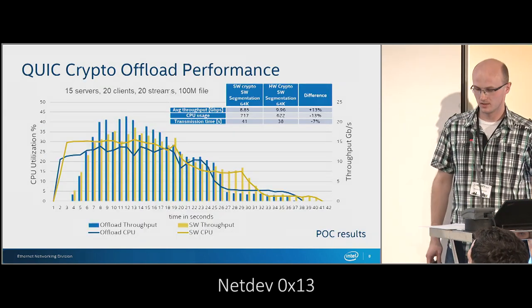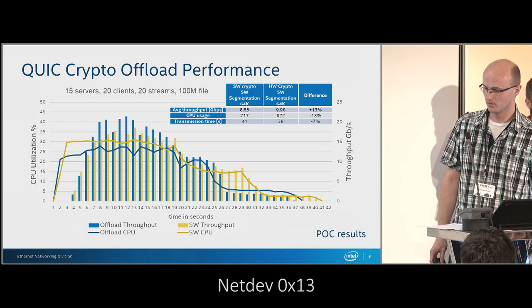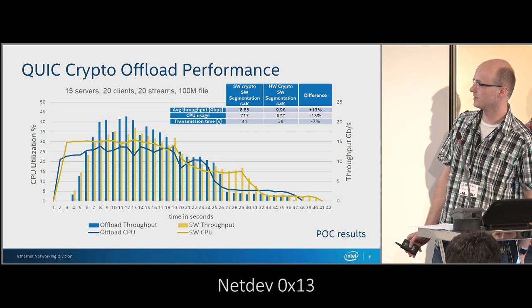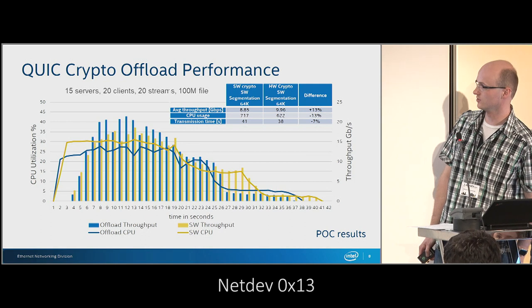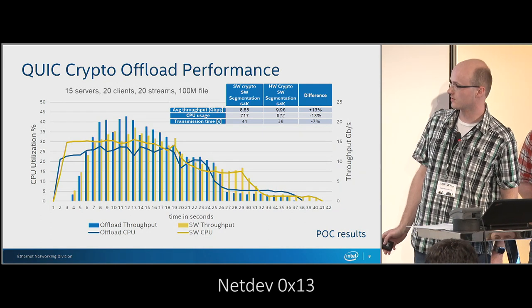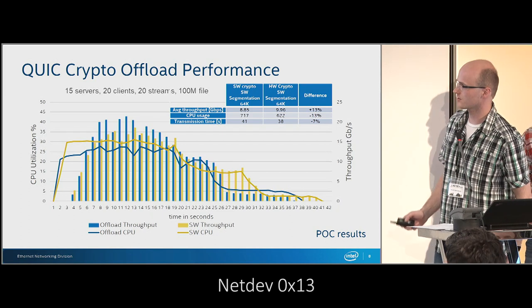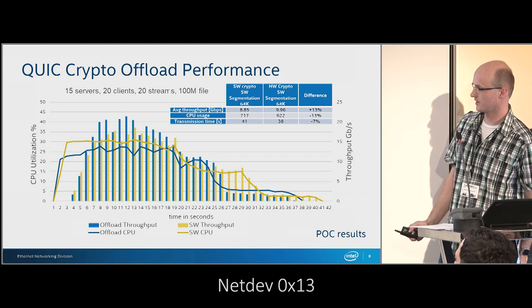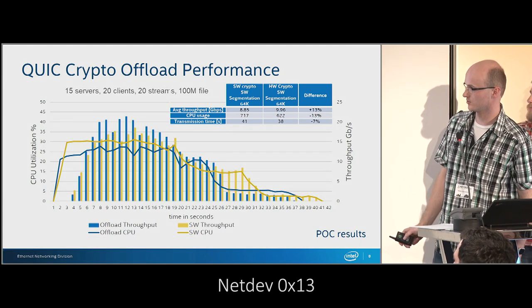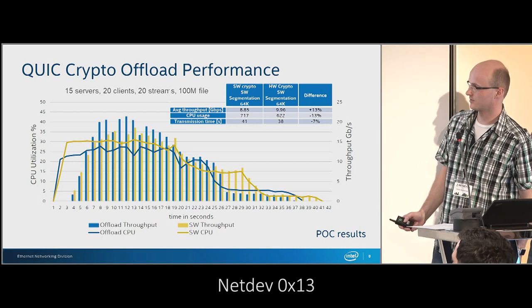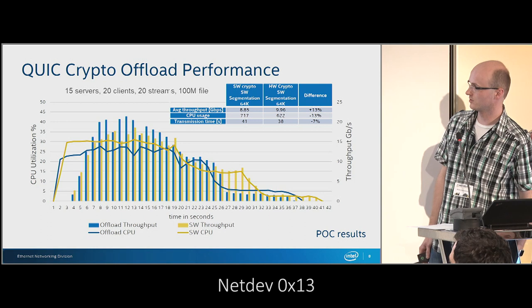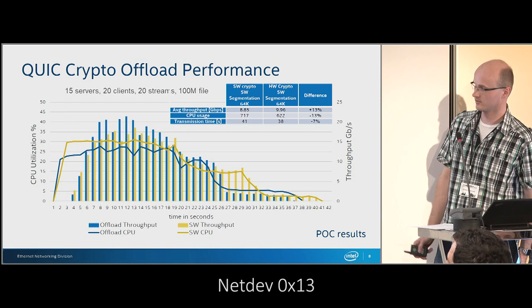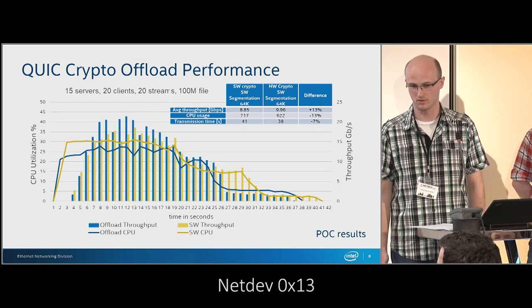With crypto offload we gained about 13% throughput and 13% better CPU utilization. On the chart, CPU utilization is drawn with lines and bars represent the throughput for every second of the test. The most important part is that when we are saturating the CPU utilization for those 15 servers, we see that we gained a lot of throughput by using the crypto offload.